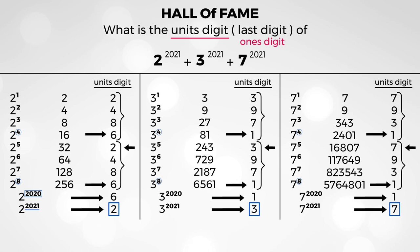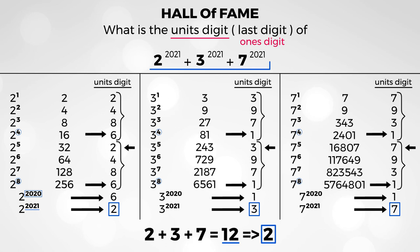So there you have it. The units digit of 2 to the power of 2,021 is 2. The units digit of 3 to the power of 2,021 is 3. And the units digit of 7 to the power of 2,021 is 7. Adding them all up gives 12, and the units digit of 12 is 2. Therefore, 2 is the units digit of this entire expression.